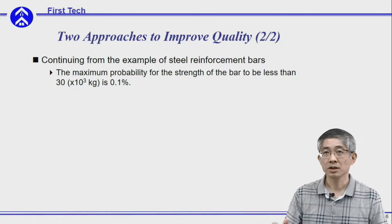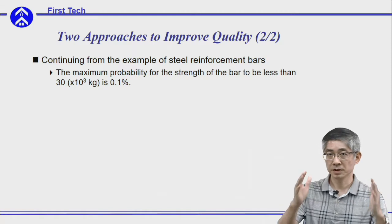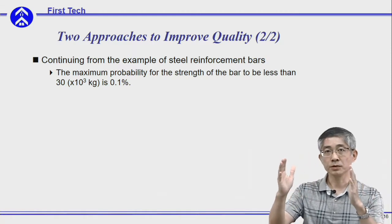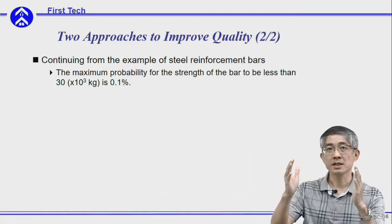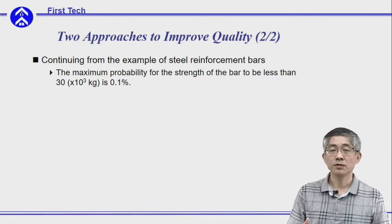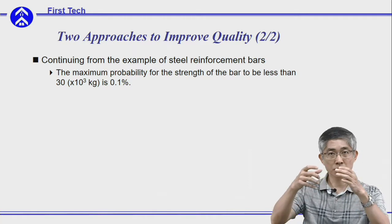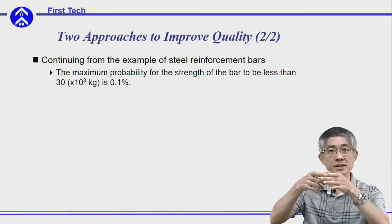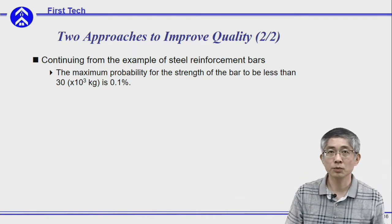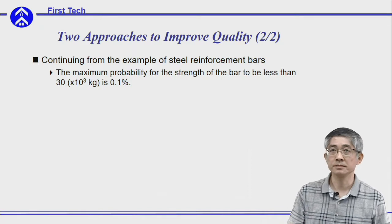However, if you shift the mean to a larger value, in practical terms this means you need to increase the overall strength of the steel bar. The most common way to do this is to increase the bar's size, but this will also be associated with an increase in cost.